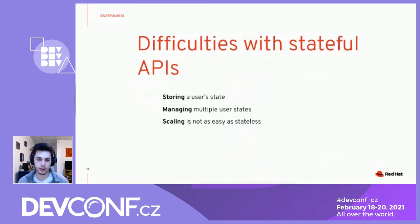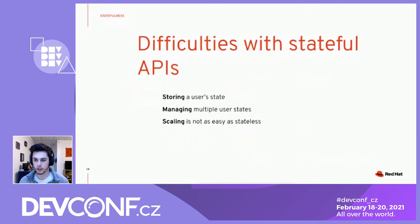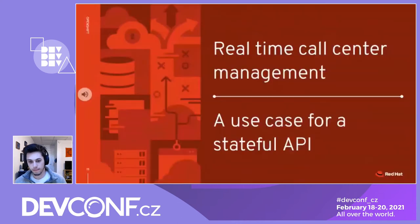So now you have to start storing the state inside the API to manage it. If there are multiple users, you're going to manage multiple different states, and those two things go hand-in-hand with scaling — and it's not easy to scale a stateful API right out of the box.